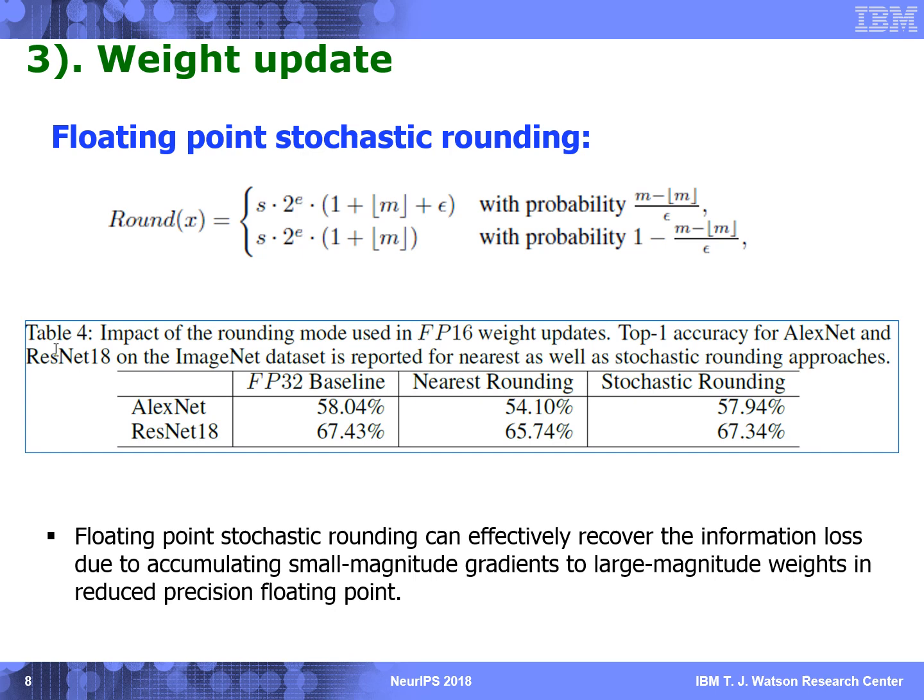The last challenge is the precision for weight update. Similar to the accumulation, weight update also has the large number adds small number problem, since the gradients are usually much smaller than the weights. However, in this case, it's difficult to use the chunking technique, because the gradient is accumulating to the weight over many batches. Instead, we use floating-point stochastic rounding. With this technique, information loss can be fully recovered with FP16.